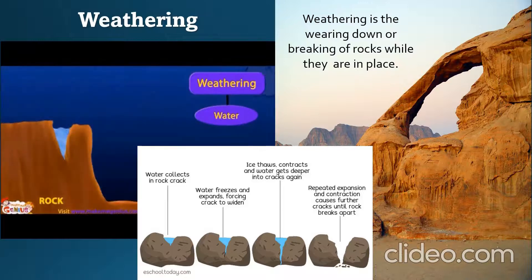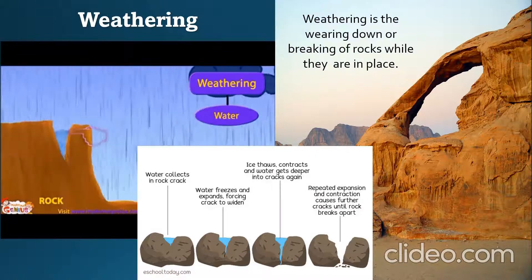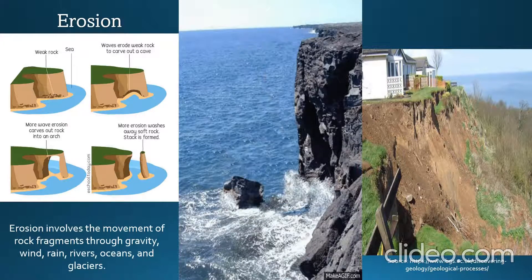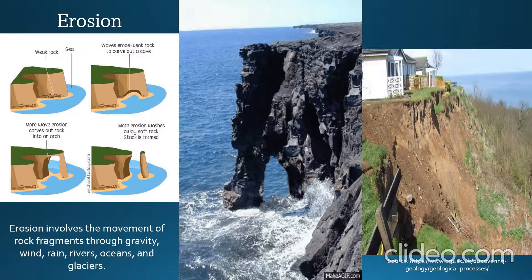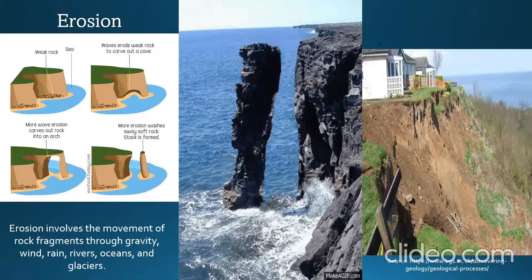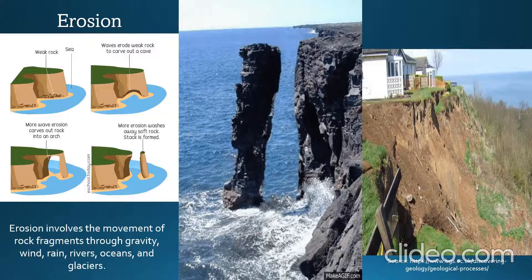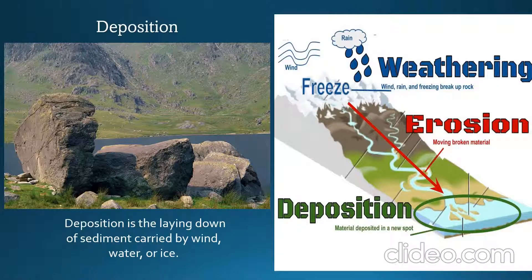One of the examples of exogenic processes is weathering. It is the wearing down or breaking of rocks while they are in place. Another example of exogenic processes is erosion. It involves the movement of rock fragments through gravity, wind, rain, rivers, oceans, and glaciers. We also have deposition. This is the laying down of sediment carried by wind, water, or ice.